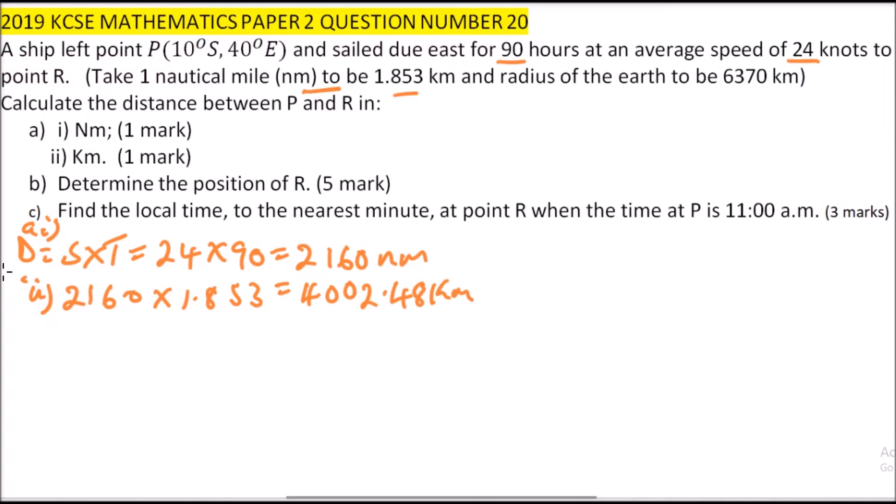Then we come to part B, and part B, we are told to determine the position of R. So we can determine the position of R, d equals alpha multiplied by 60 cosine of theta. So this equals, which we can also say it is alpha over 360, that is multiplied by 2 pi r cos theta.